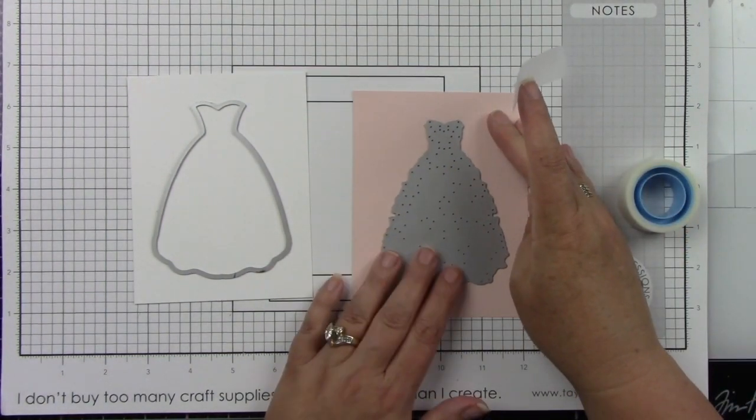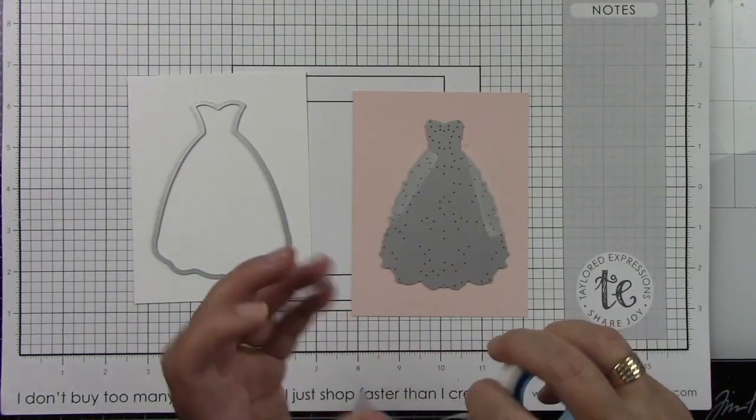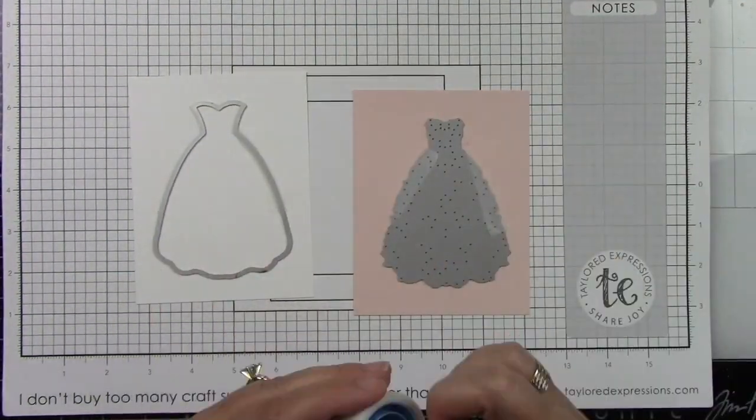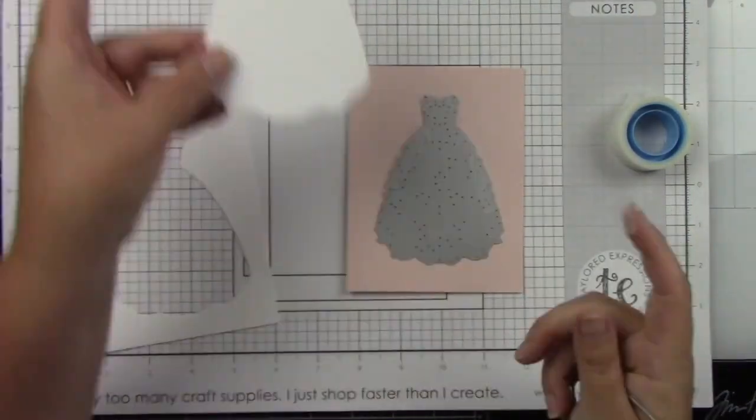I'm going to tape these two dies in place and then run them through my die cut machine. So this first one that I'm taping down on the Rose Water is going to have all of the intricate, but it's not going to cut out the solid die like the one on the white. So I'm going to show you how we're going to accomplish that.